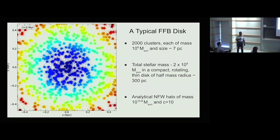Let's think of a typical FFB disk. We have 100% cluster star formation, so all these stars are forming in clusters. I have an idealized setup with 2,000 clusters, each of mass 10^6 solar masses, and a size of 7 parsecs, arranged in a compact disk.